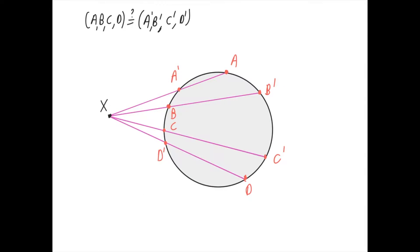Here is yet another way in which we can project cross ratios. If we have the points a, b, c, and d that lie on the same circle, and we choose the point x somewhere in the plane, we can draw the lines connecting x with the points a, b, c, and d, and then intersect the circle for the second time at the points a prime, b prime, c prime, and d prime, respectively. Then the cross ratio of a, b, c, and d would equal the cross ratio of a prime, b prime, c prime, and d prime no matter where we chose the point x.